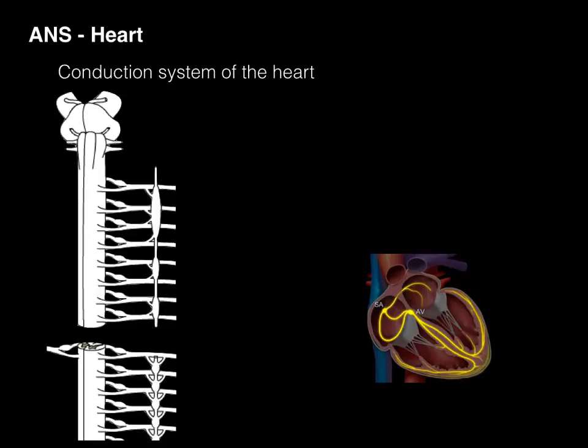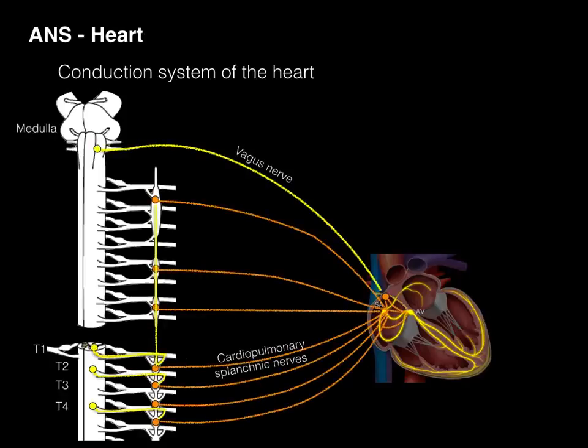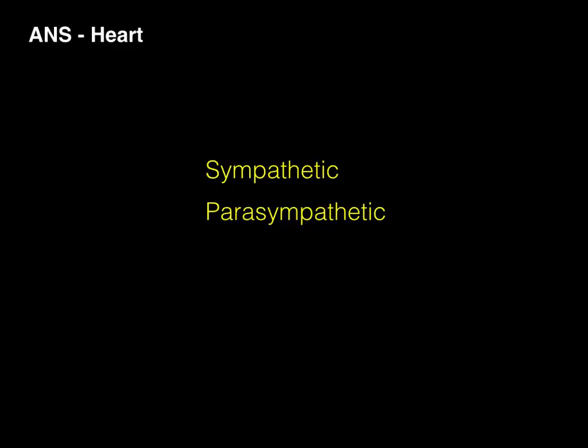Conduction system of the heart. Here we've got the brainstem, cervical cord, and upper thoracic levels, and there's the heart with the SA and AV node. We see that all these cardiosplanchnic nerves and the vagus nerve will come down to innervate those SA and AV nodes to regulate the conductive system in the heart, which then affects heart rate and ultimately cardiac output. Let's take a look at both sympathetic and parasympathetic, with a focus right now on the sympathetic nervous system.